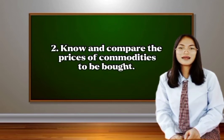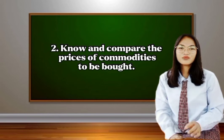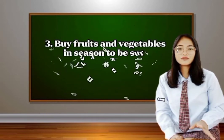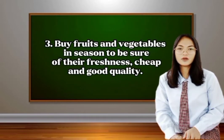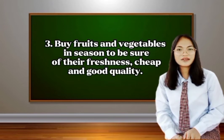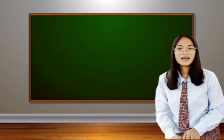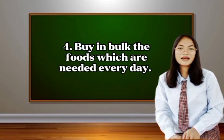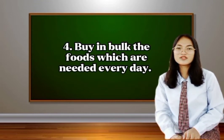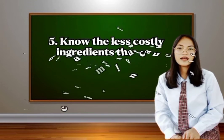Number three: buy fruits and vegetables in season to be sure of their freshness, low cost, and good quality. Number four: buy in bulk the foods which are needed every day. Number five: know the less costly ingredients that can be used as substitutes for expensive items.